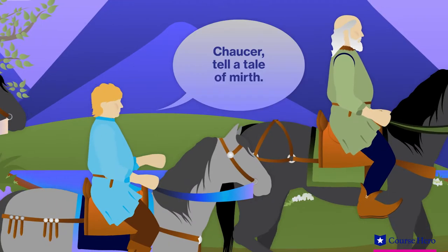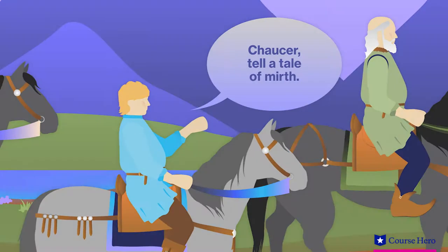In Chaucer's Tale of Sir Topaz in The Canterbury Tales, the prioress' tale has a sobering effect on the company, and Harry Bailey calls on Chaucer himself to tell a tale of mirth.